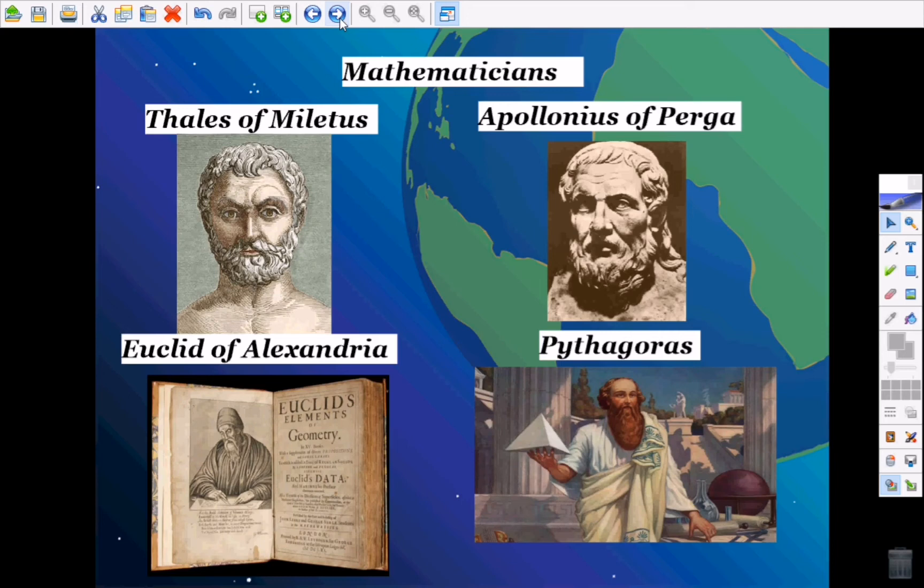Then we have Euclid, a Greek mathematician and geometer also known as the father of geometry. Some of his greatest work can be the sum of the interior angles of a triangle is equal to 180 degrees. Another one can be, in a right triangle, the square of the hypotenuse is equal to the sum of the square of the legs, which is the famous Pythagorean theorem.